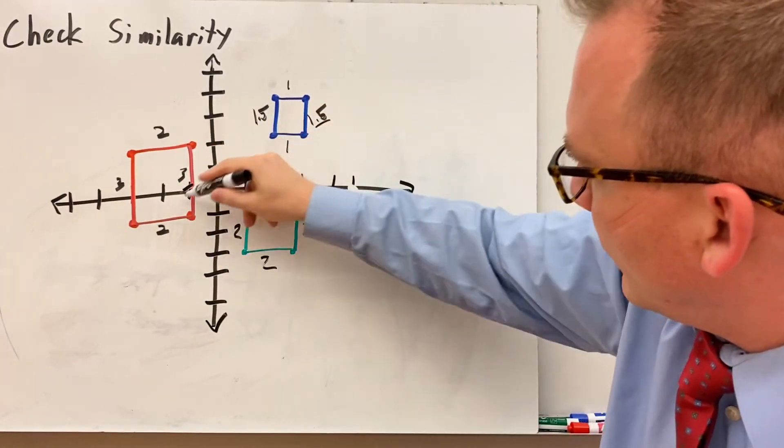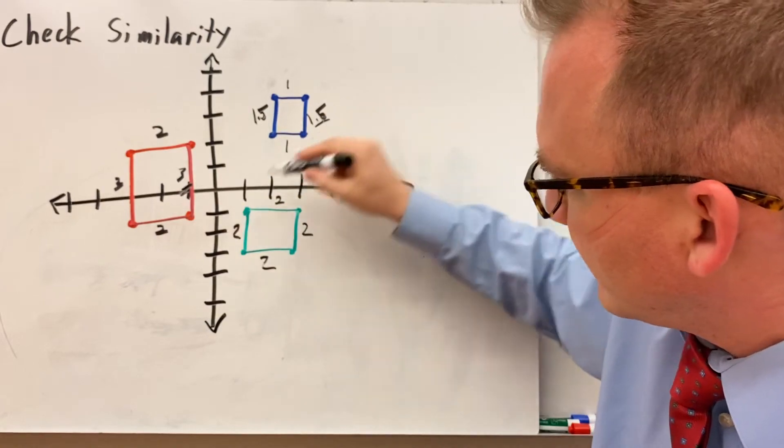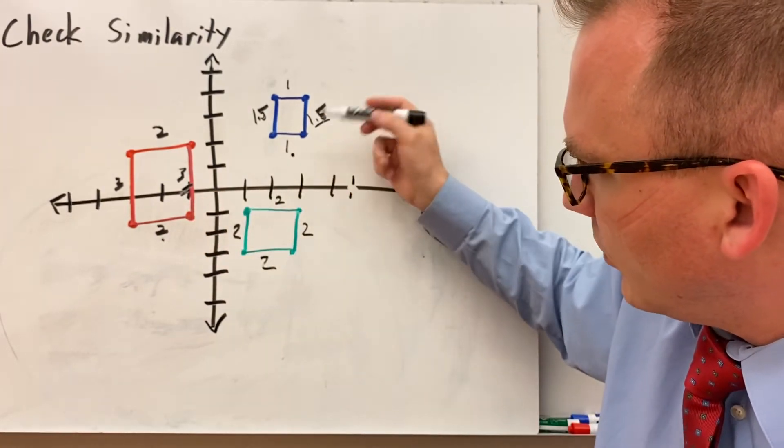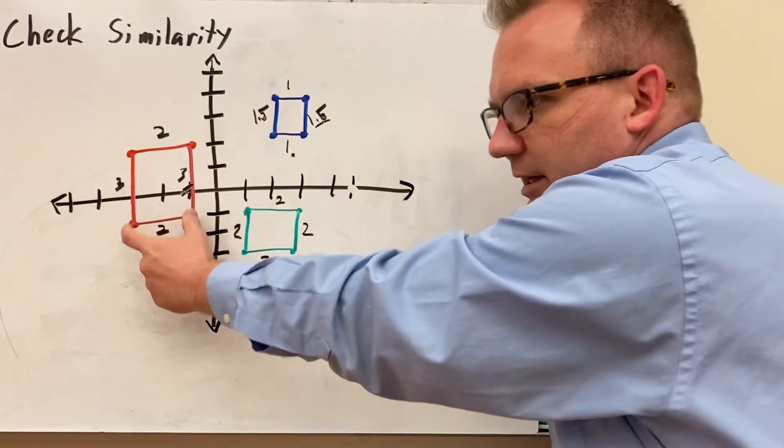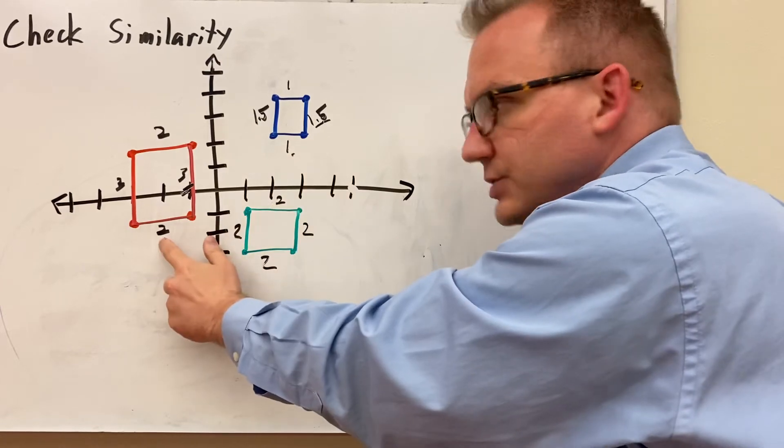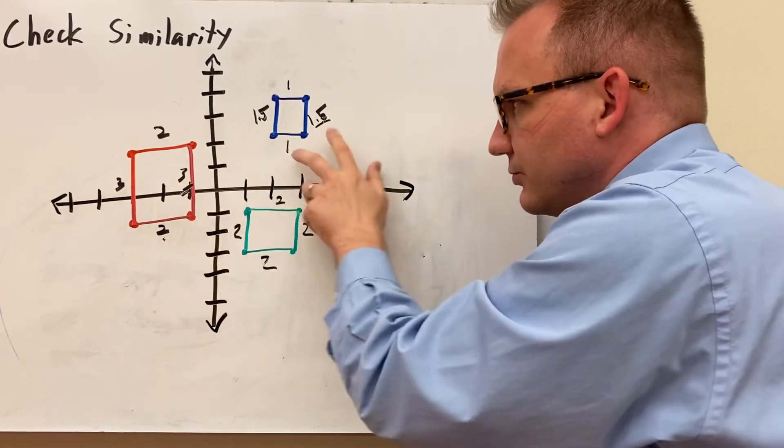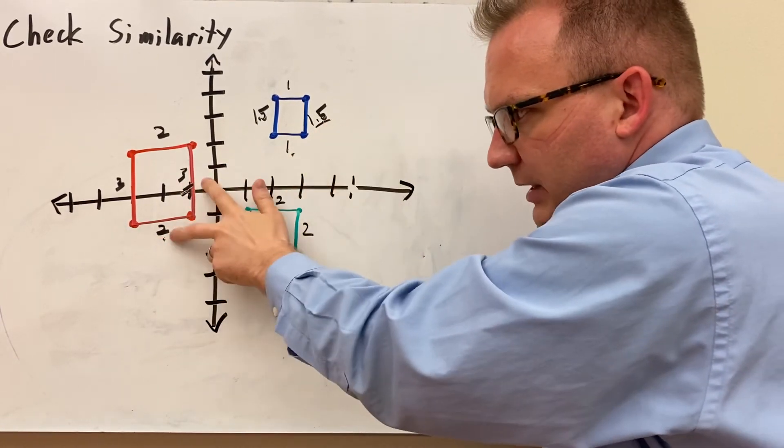Or, you could go to start here and dilate this. 1 times 2 is 2, and 1.5 times 2 is 3. So, these two sides correspond to these two. And this is just, the red is just an enlargement of the blue, or the blue is a shrinking of the red, depending on how you start.